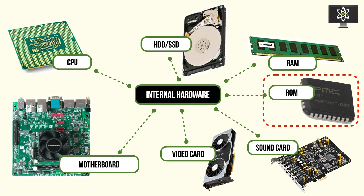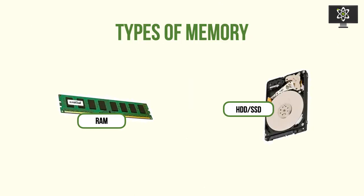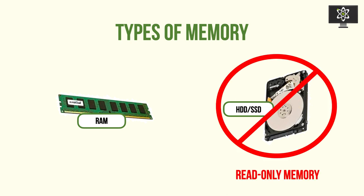ROM is designed to store configuration data for computer systems in a permanent sense, whereby the data is literally burnt into the chip and it's not designed to be rewritten. If we looked at the two types of memory discussed previously — RAM and HDDs/SSDs — people can mistake internal storage as a type of read-only memory because RAM is random access memory. They are not, because internal storage can be rewritten at a very frequent rate.